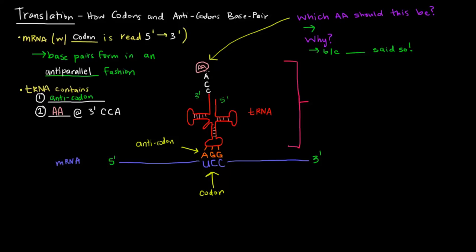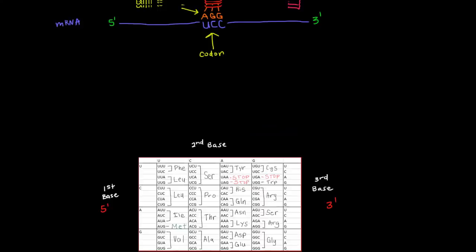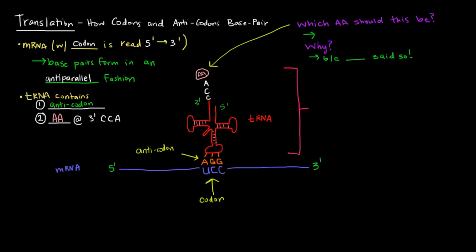Now this amino acid is what's coded for by this codon. So if this codon is UCC, which amino acid should this be? Let's check this table. If we have UCC, that should be a serine. The answer here is that this amino acid should be serine.